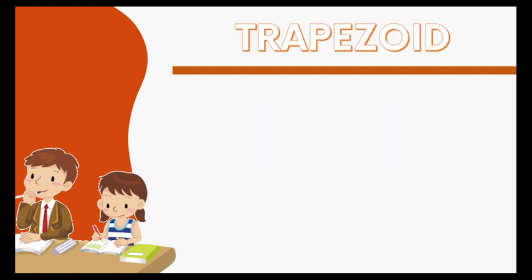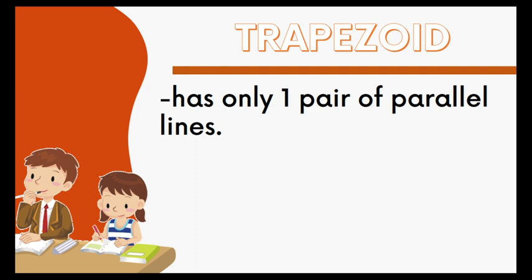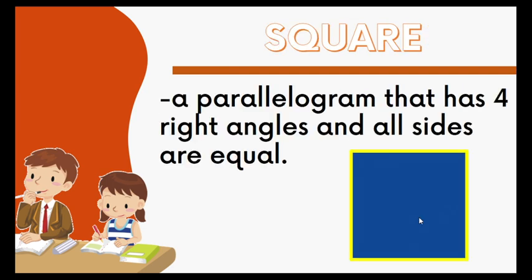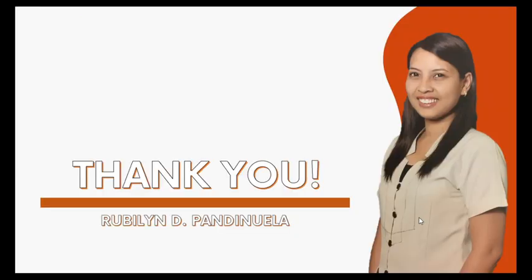And then we have the trapezoid. A trapezoid has only one pair of parallel lines. This is the first pair of parallel lines. Again, those are the different kinds of quadrilaterals. Thank you so much for listening and see you on my next video.